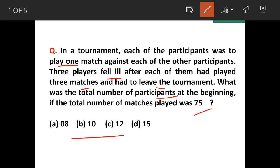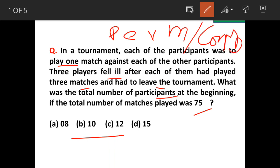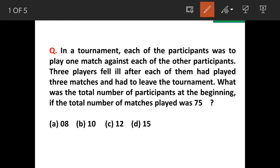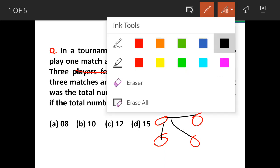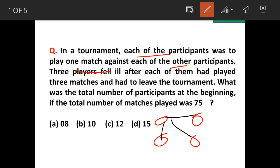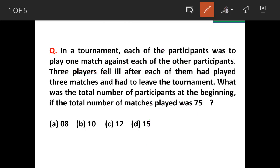The question belongs to permutations and combinations. Let's understand the rule: each participant plays one match against each other participant. For example, with four participants, the first fellow plays two matches — one against each other participant. Similarly, each subsequent player plays one match against every other participant they haven't yet faced, so we avoid counting the same match twice.